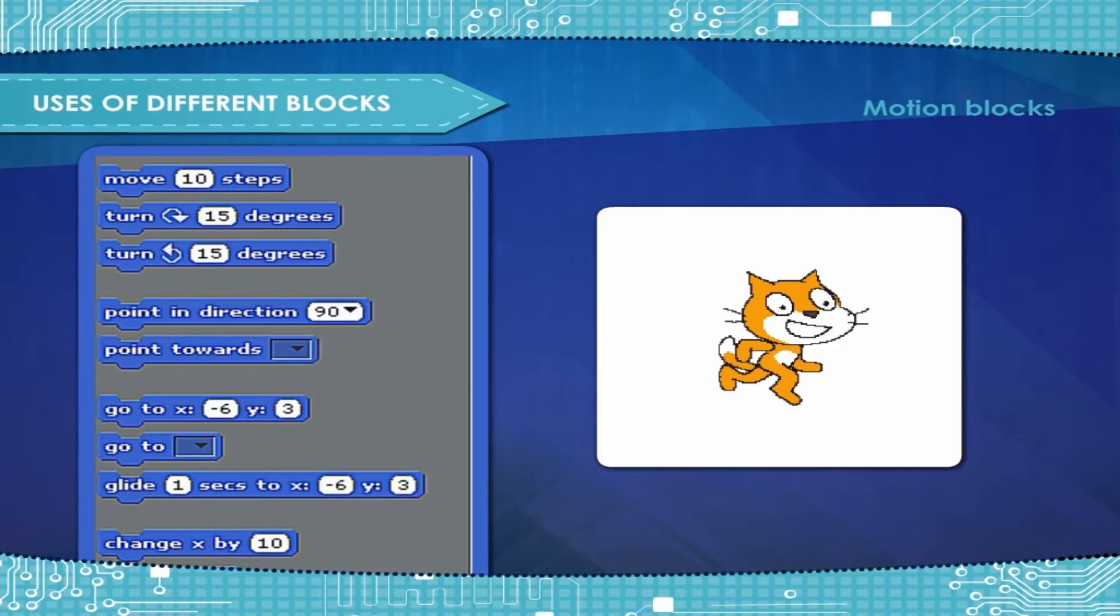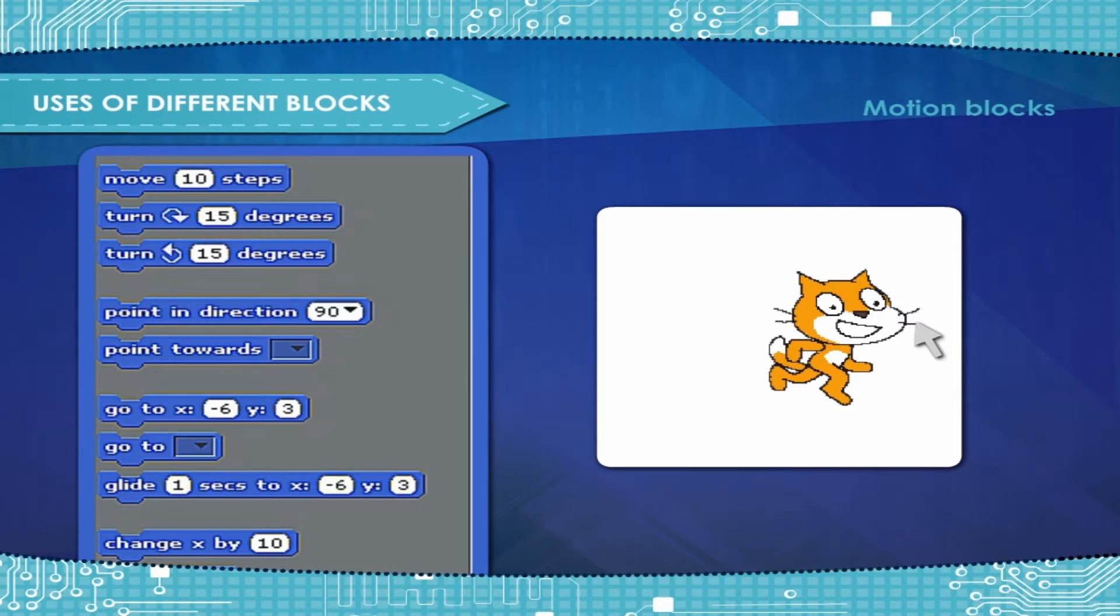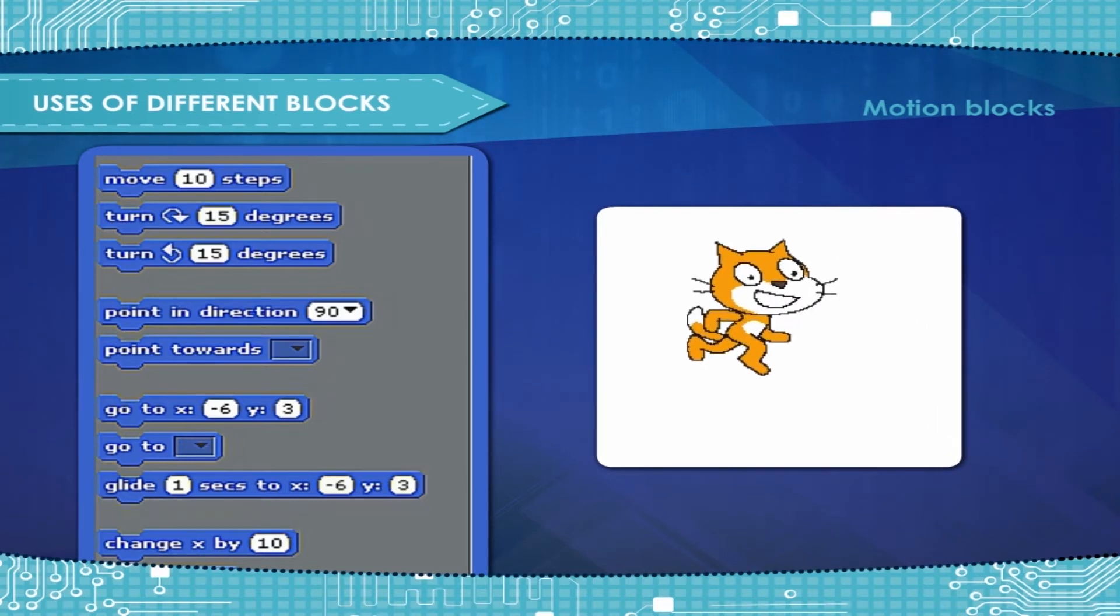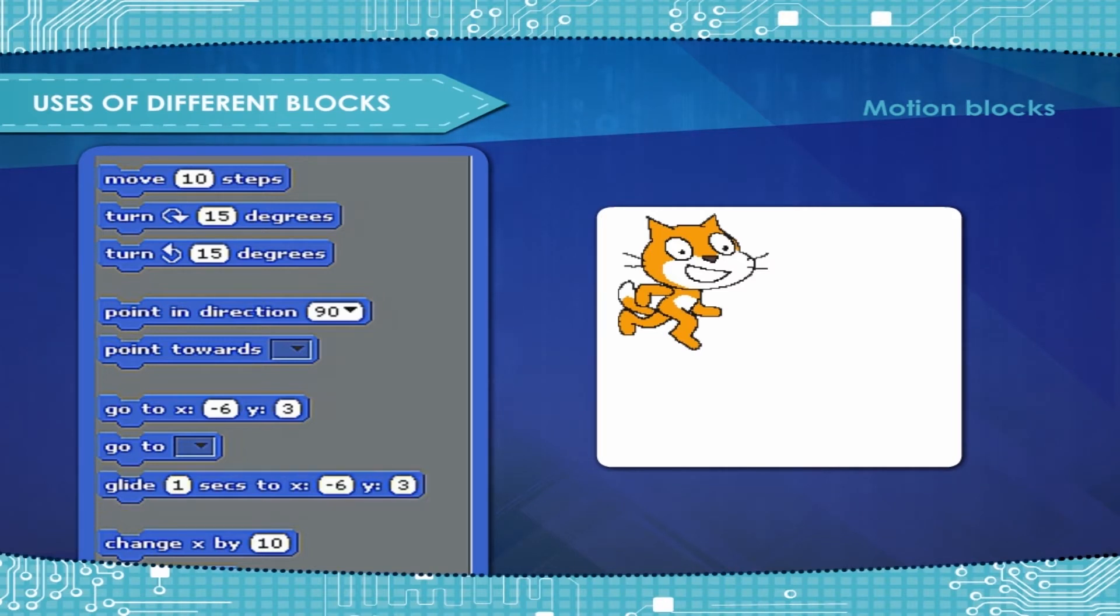Point towards: Points the sprite towards the mouse pointer or another sprite. Go to: Moves the sprite to the mouse pointer or another sprite. Glide seconds to X, Y: Glides the sprite to the location taking as long as the specified amount of time.